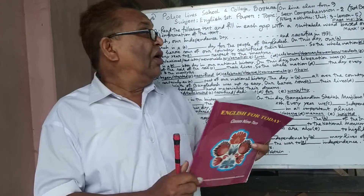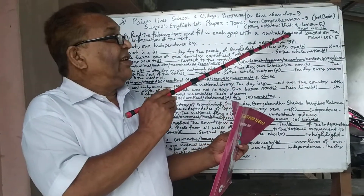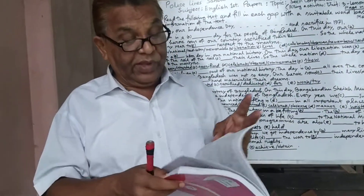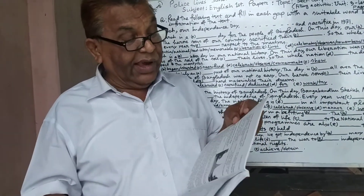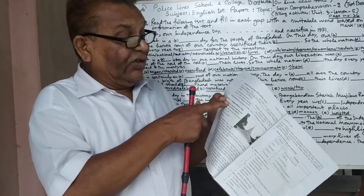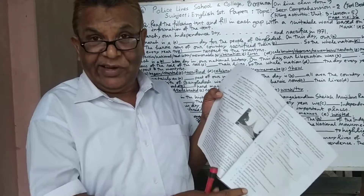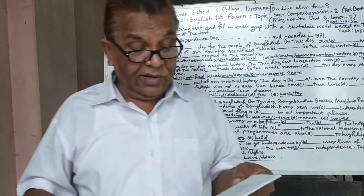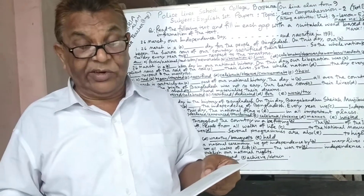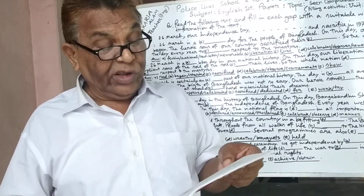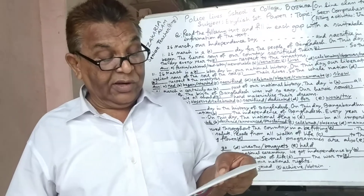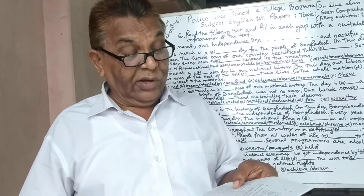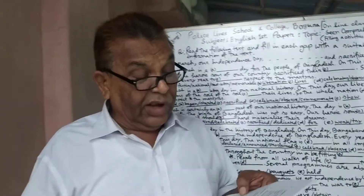I am teaching you on this Seen Comprehension 2 from the textbook. Here is the topic: Lesson 5, Independence Day. I am telling you about that story — please follow carefully. That story: Independence Day!